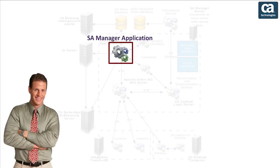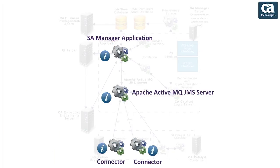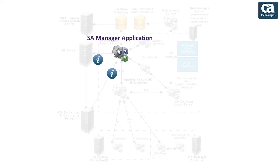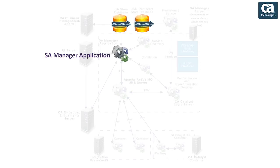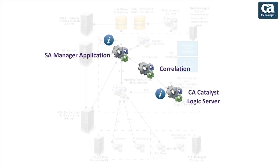The next component is SA Manager. The SA Manager integrates the data that the connectors send. It correlates data so that CIs managed in multiple products are managed as one entity in CASOI. It updates the persistent store with USM data and provides correlation information to the logic server for reconciliation.